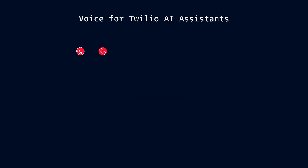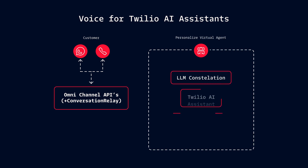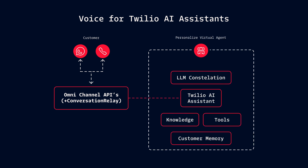Then, to make using Voice AI even easier, we're launching Voice for Twilio AI Assistants, a fully customizable framework for building AI agents that can handle phone calls in a human-like way. AI Assistants work across multiple channels — SMS, WhatsApp, and now Voice. That's right, Twilio AI Assistants have achieved omnichannelness.